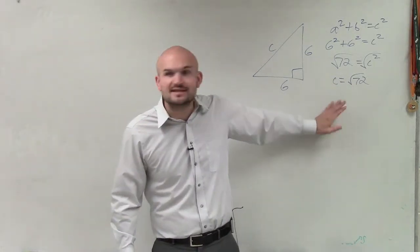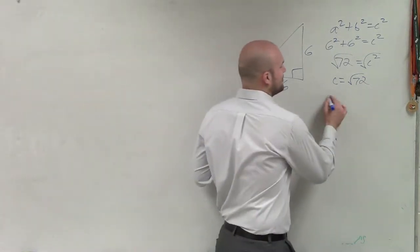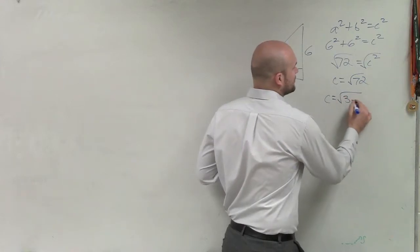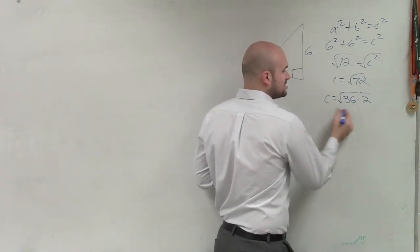You're not going to see on a test the square root of 72. If it can be simplified, look to simplify this. I can break this down into the square root of 36 times 2. I can now take the square root of 36, which is 6.